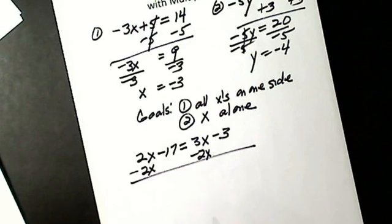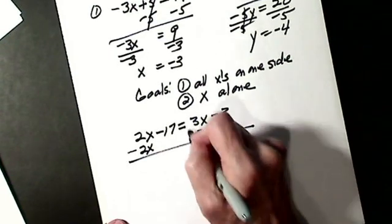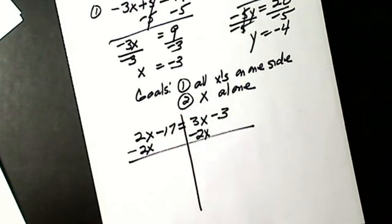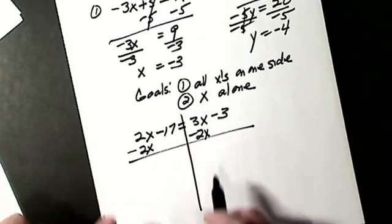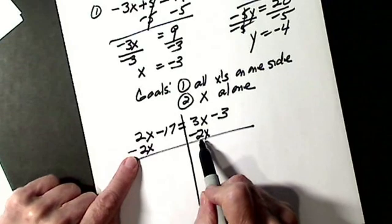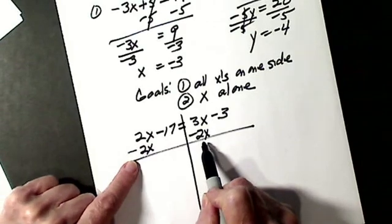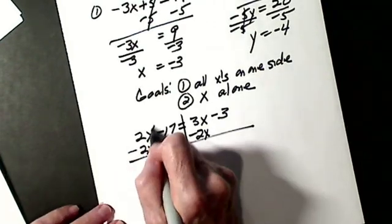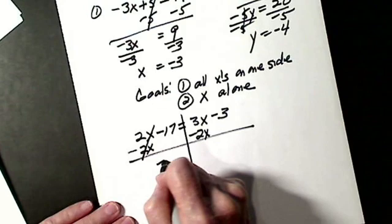If you have trouble with equations, draw a line down where your equal sign is so you can see at a glance both sides have to match exactly. This goes to zero.